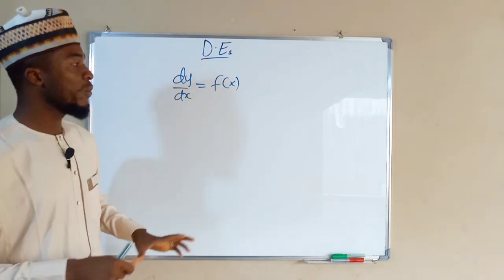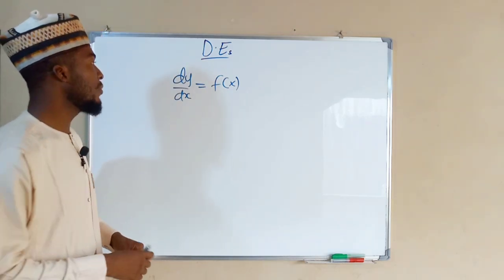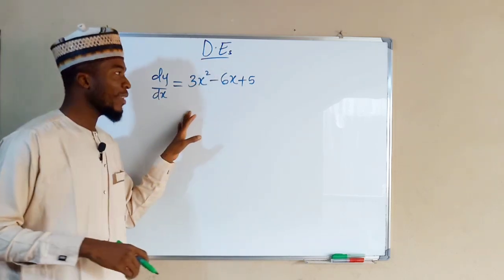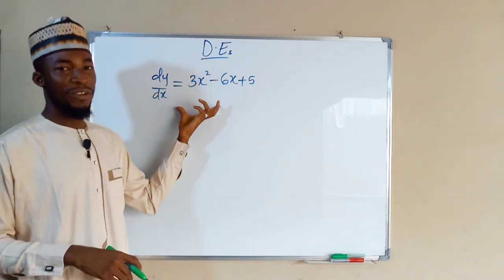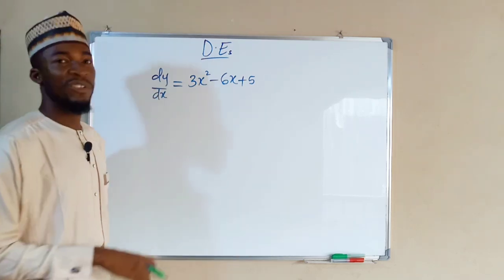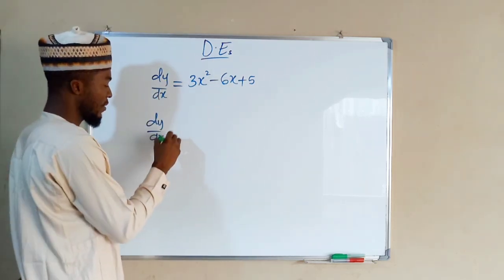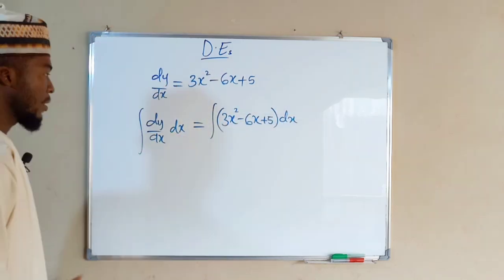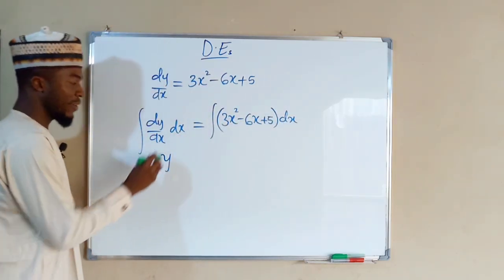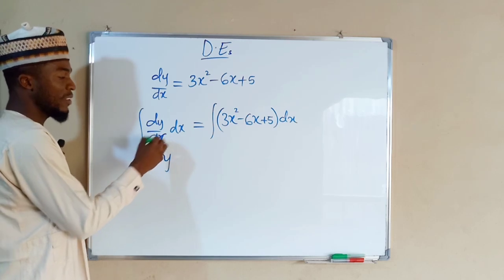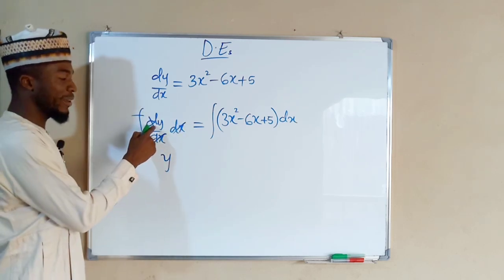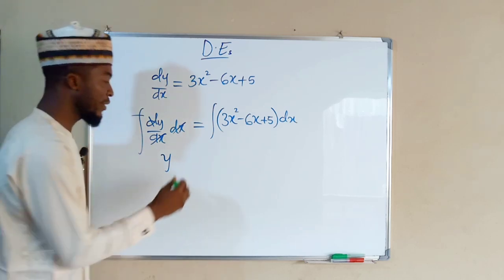Now let us look at the first example. To solve this differential equation, we are going to integrate both sides with respect to x. From the left-hand side, we only have y, because the dx cancels and the integral cancels d, leaving only y.